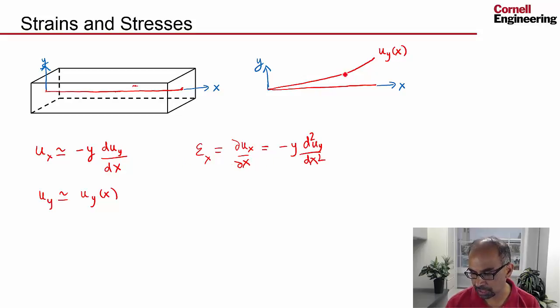And epsilon y is given by du_y by dy—that's a normal strain in the y-direction—and we assume that u_y doesn't depend on y, so that comes out to be zero.